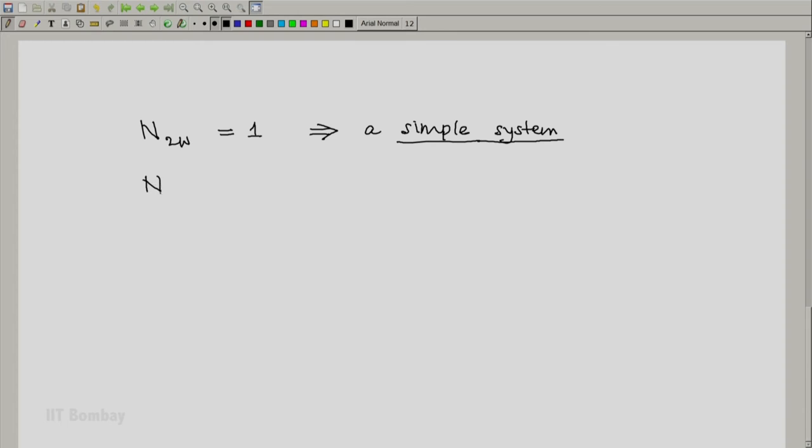If the number of two-way work modes is greater than 1, 2, 3, 4, we call that system a complex system.